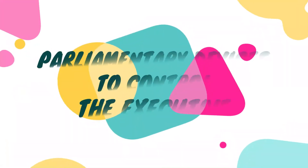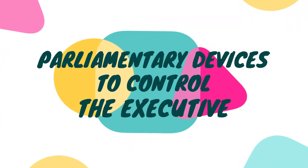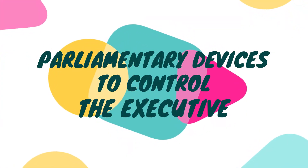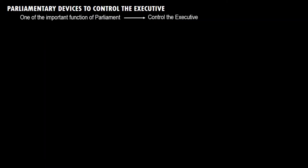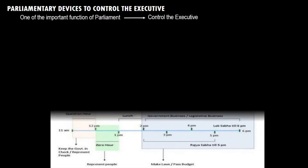Parliamentary Devices to Control the Executive. One of the important functions of the Parliament is to control the Executive. The following mechanisms are available to it for this purpose.